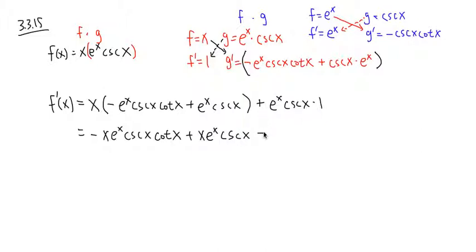And then this part is just plus e to the x cosecant x. And now, is there anything else that we can do? And once again, if you want to match the answer in the back of the book, this is what I did.